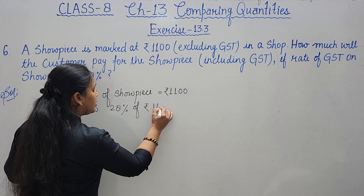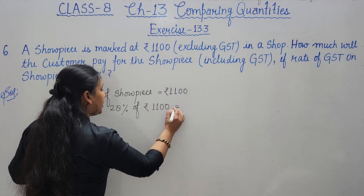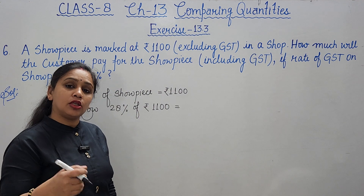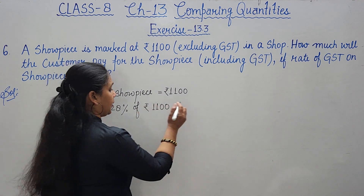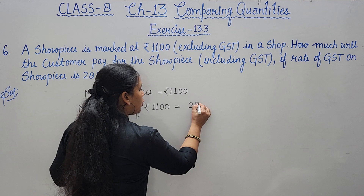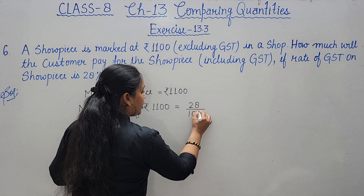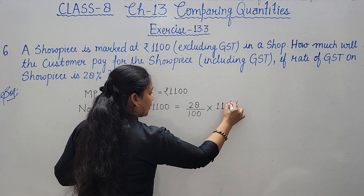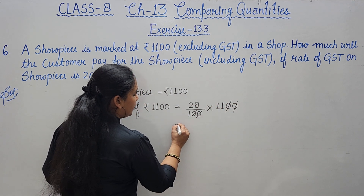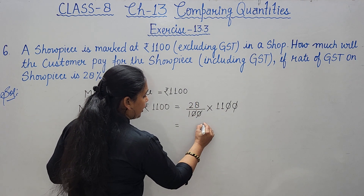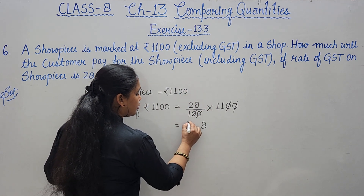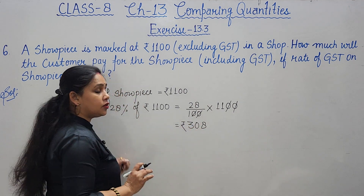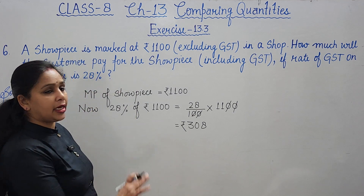To calculate 28%, we write 28 upon 100 into 1100. Cancelling and multiplying: 28 × 11 = 308. So your 28% of 1100 comes to rupees 308.